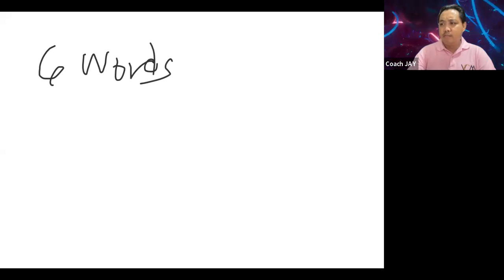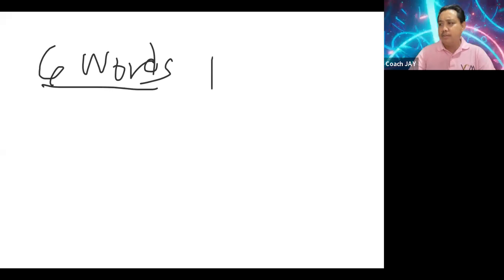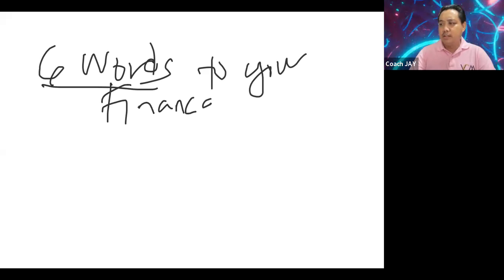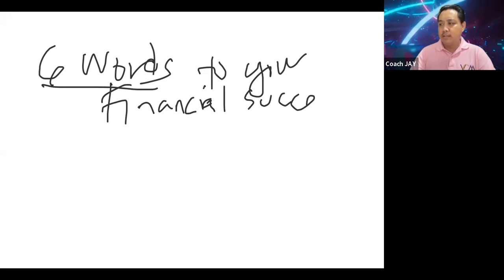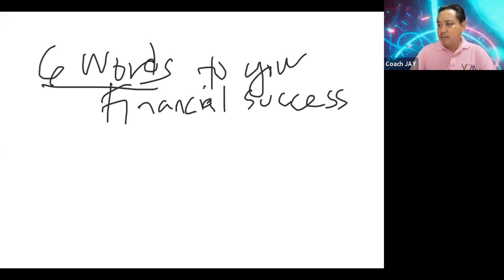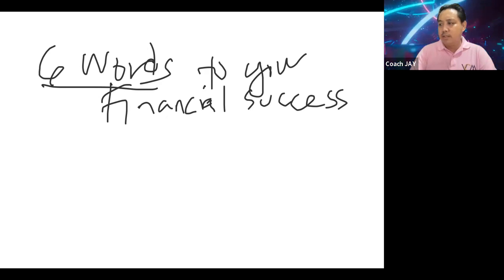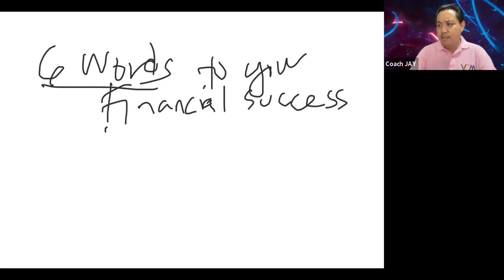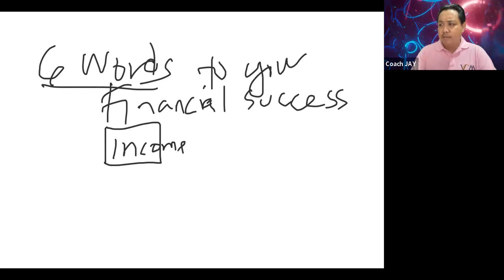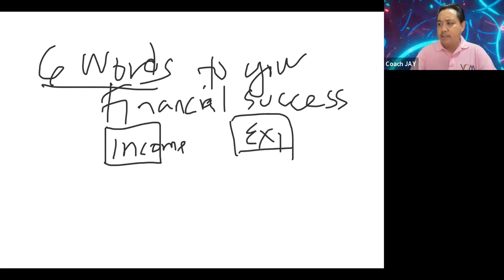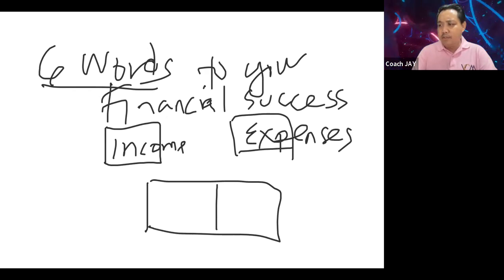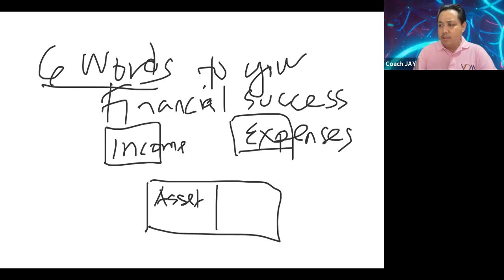So what are these six words to your financial success? We will illustrate it. We have income — that's the first word. Then we have expenses — that's the second word. Then here we have what we call asset versus liability.